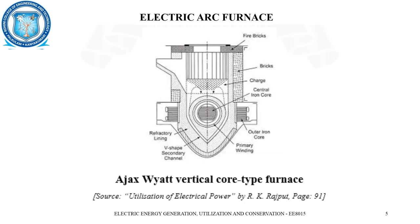Next is the electric arc furnace, which is used for generating an electric arc. When an arc is produced, there may be scattering of that arc. To avoid such a scattering effect, we use an electric arc furnace. A vertical core-type furnace is very helpful in protecting the charge from scattering, keeping the charge within the container itself so it can be safely taken out. The construction of the electric furnace has a V-shaped channel at the bottom.